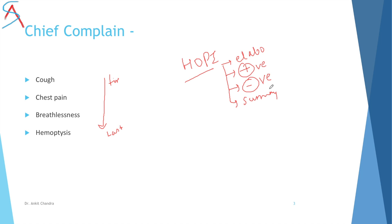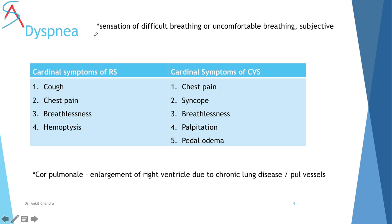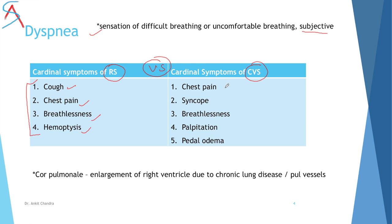First we discuss dyspnea. The definition of dyspnea is a sensation of difficult or uncomfortable breathing. You have to differentiate symptoms of the respiratory and cardiovascular systems. There are four cardinal symptoms of the respiratory system: cough, chest pain, breathlessness, and hemoptysis. The cardiovascular system has five: chest pain, syncope, breathlessness, palpitation, and pedal edema.